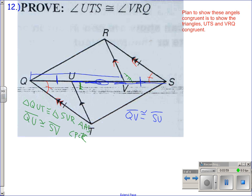Because those first two triangles were congruent here, triangle QUT congruent to triangle SVR, also by corresponding parts you have segment UT congruent to segment VR.